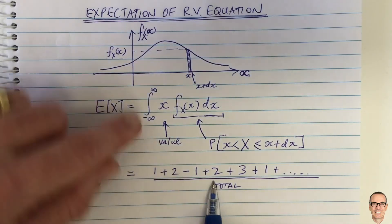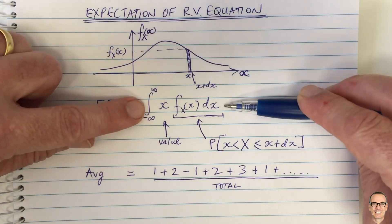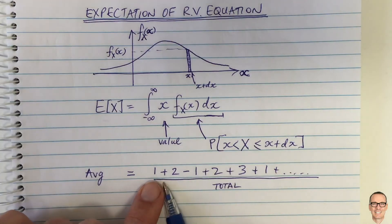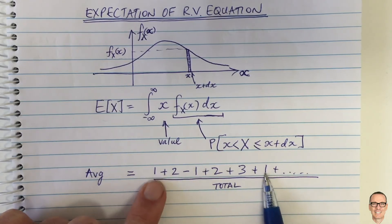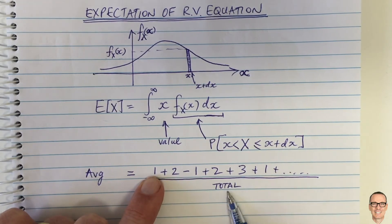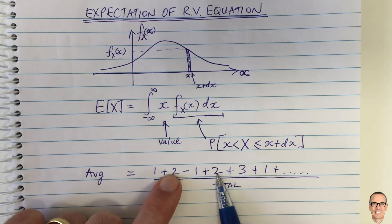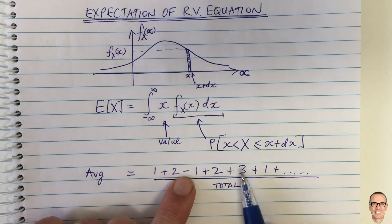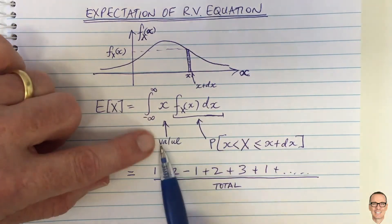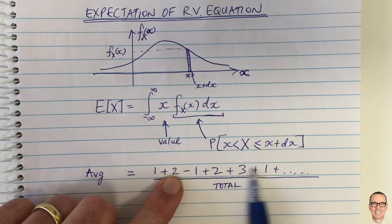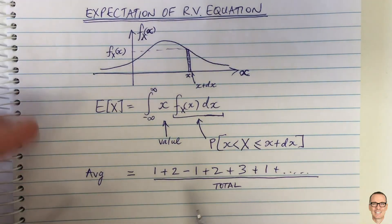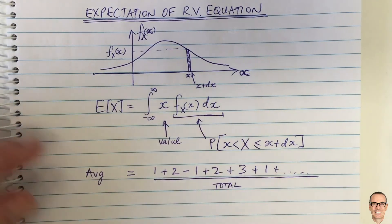You can see that this is exactly the same as what's happening in the expectation, if we take enough samples in time. The ones will happen with a certain regularity divided by the total — that's their proportion. The twos, minus ones, and threes will each happen with a certain regularity, and it's exactly the same as the value times the probability — here it's the value times the ratio. If you take this over an infinitely long time and it's ergodic, those ratios equal the probabilities.